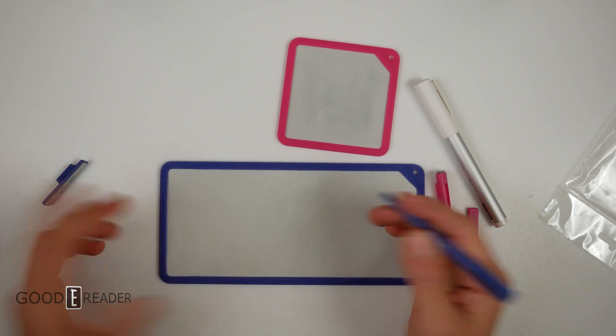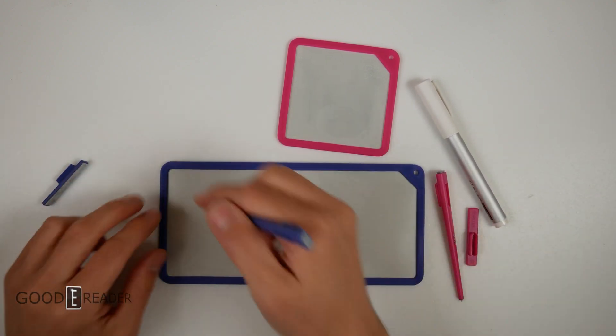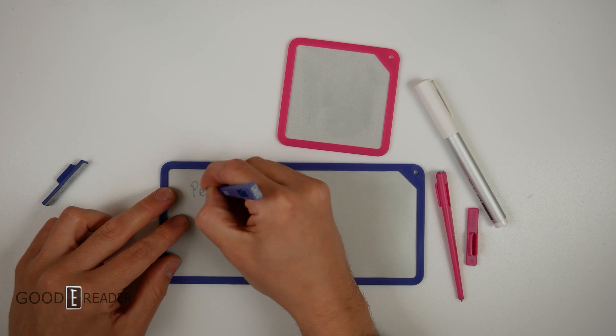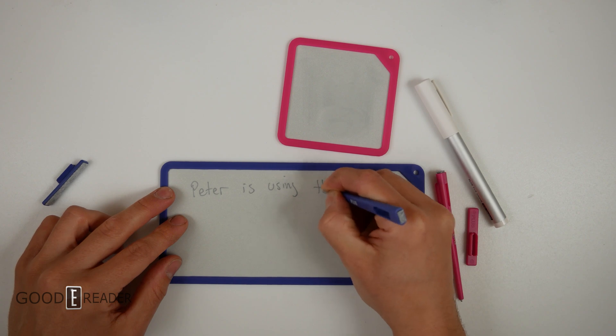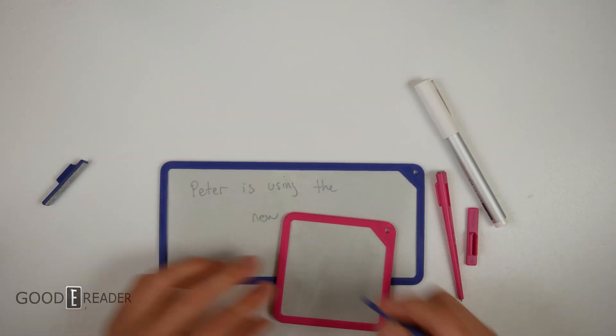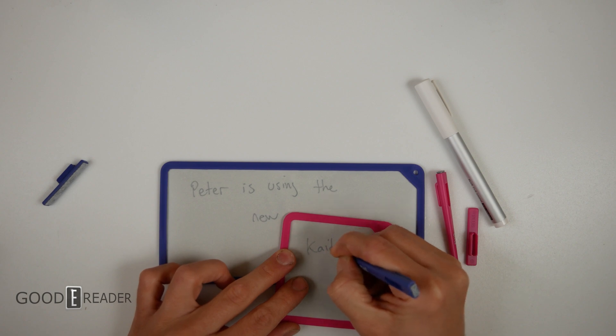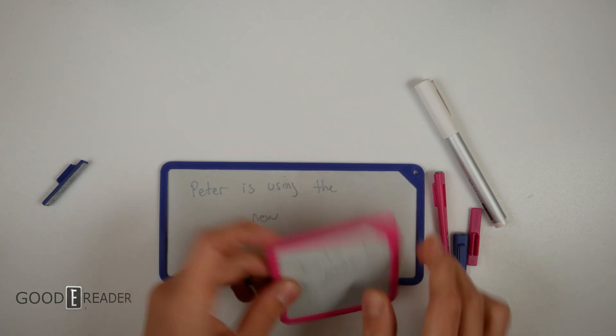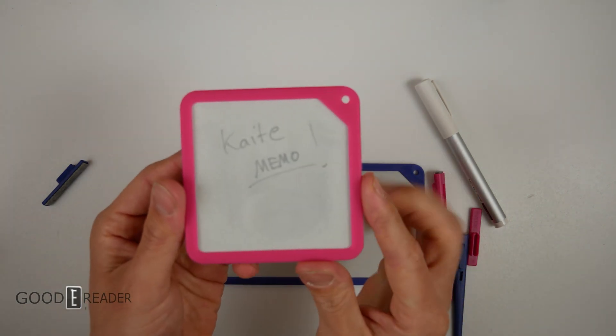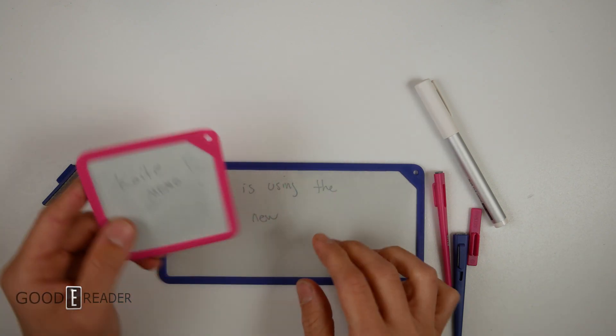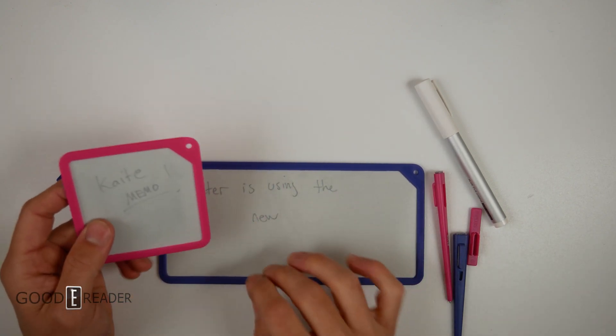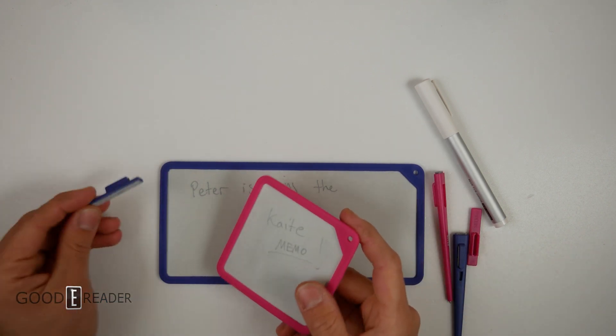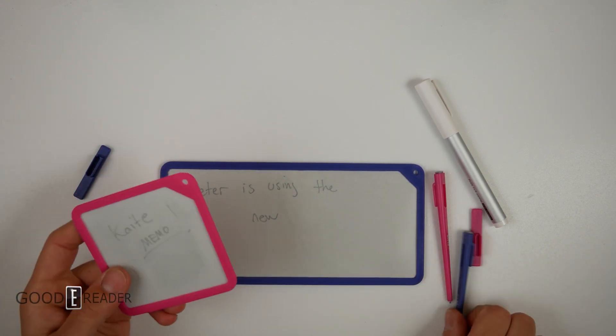We'll just go ahead and do some light note taking because, again, this is not a very in-depth video. So, Peter is using the new Kaite Memo. The thing about these guys is that it's as white on black as any magnet board you will find. No other magnet board actually works like this.